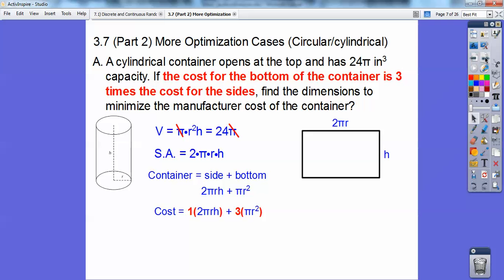Let's get the cost involved. The bottom of the container, which is πr², is three times the cost of the side, so it's a 3 to 1 ratio. We want to minimize this cost, so we need to get one variable and take the derivative.